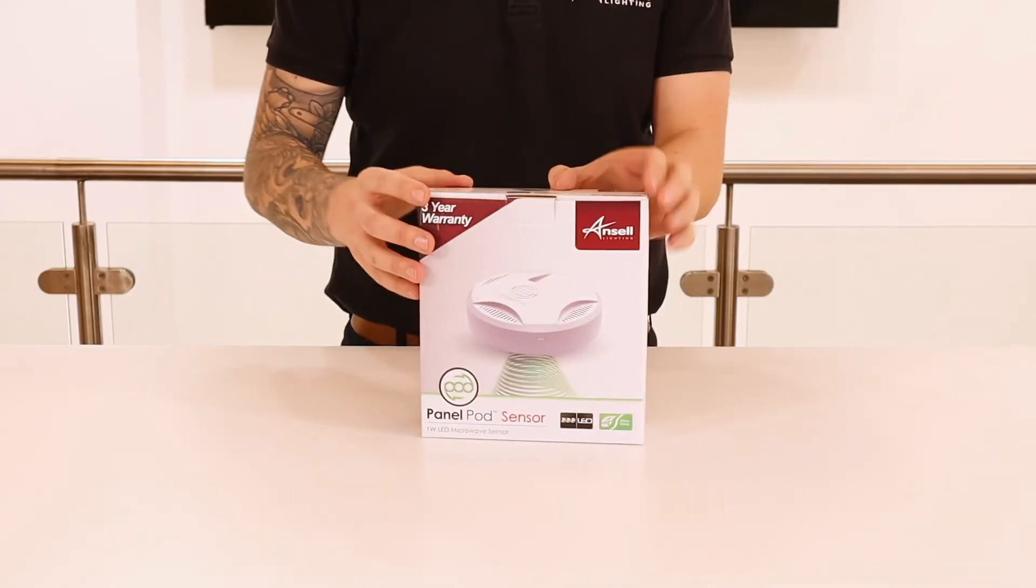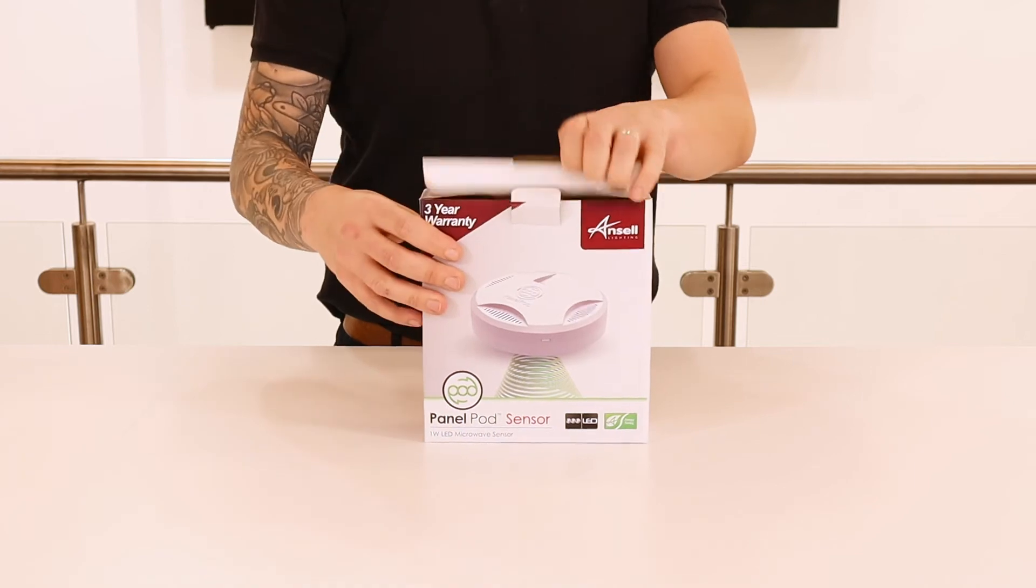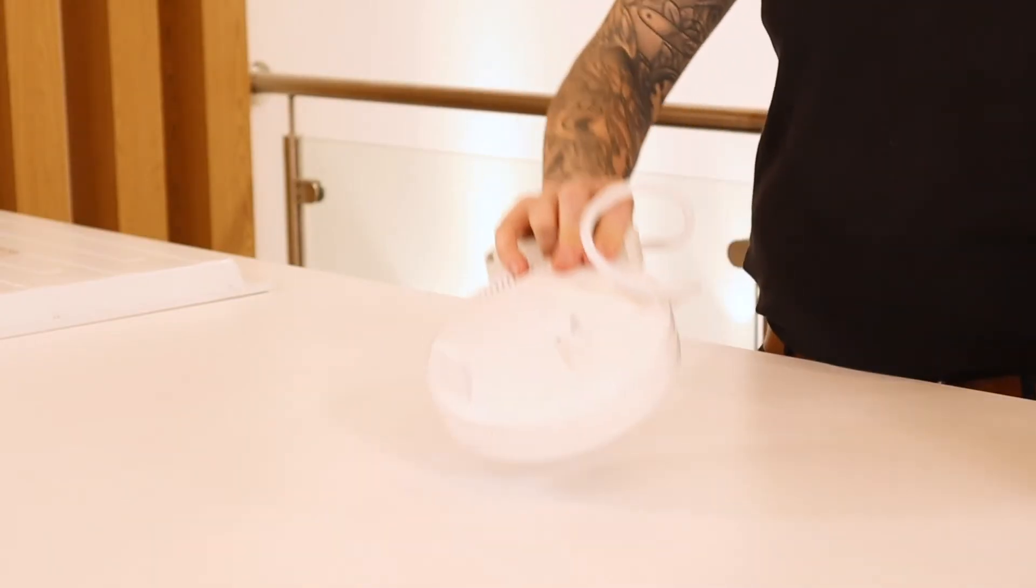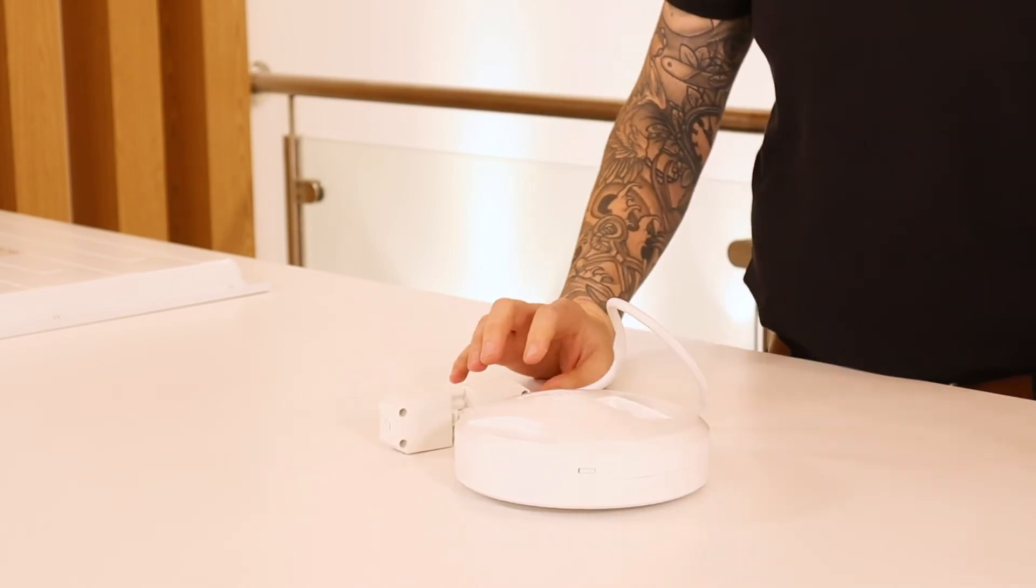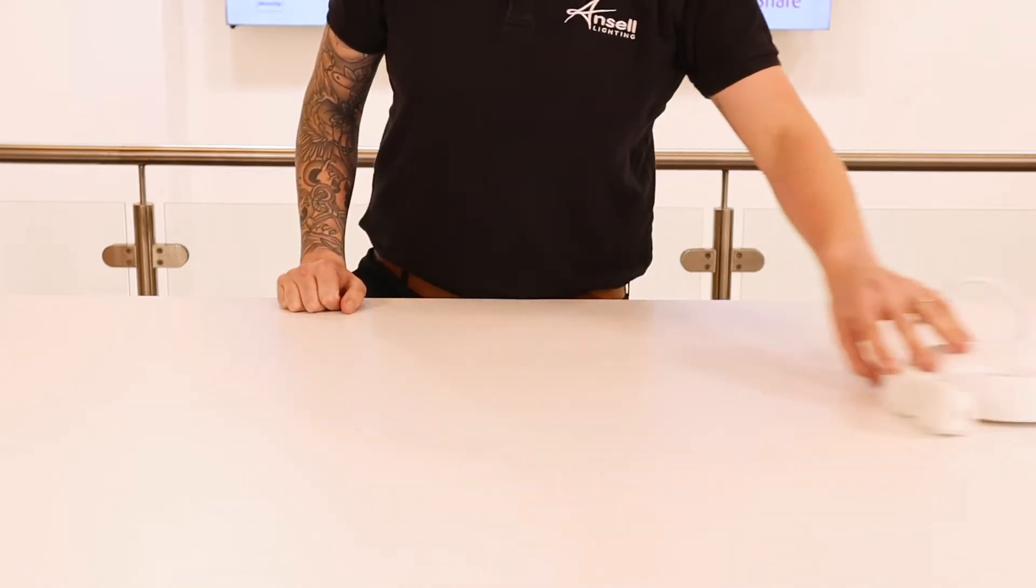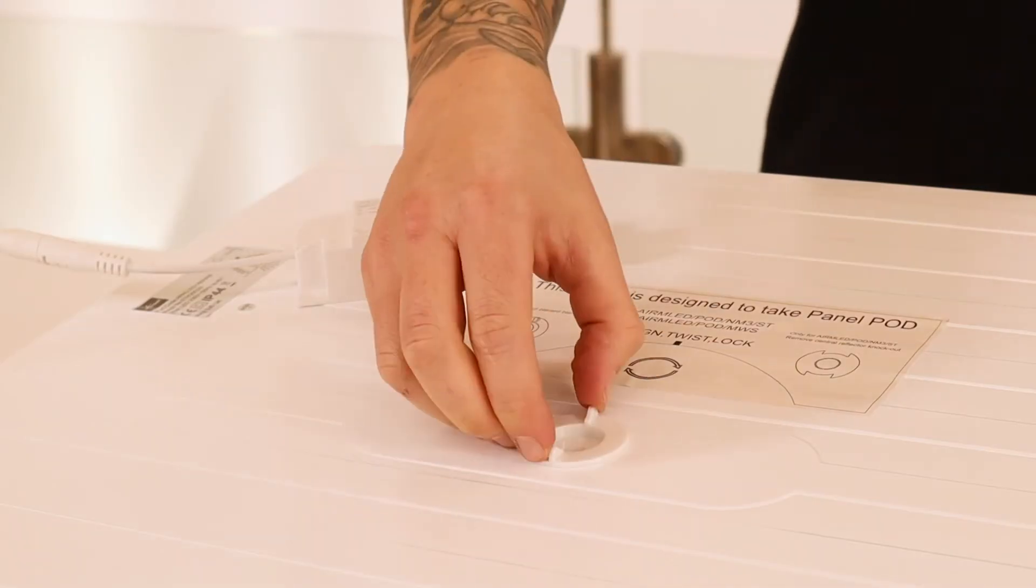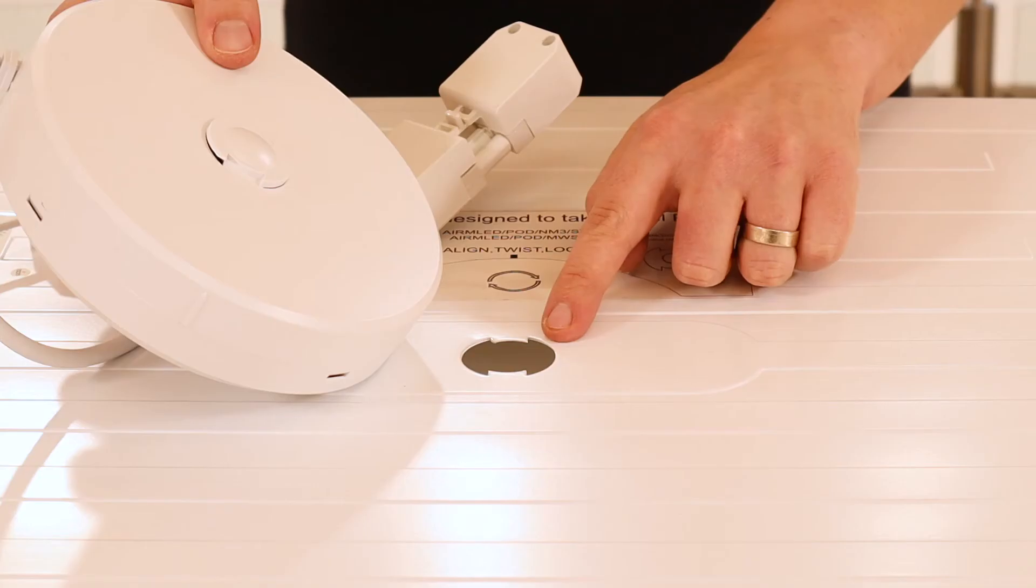The PanelPod sensor can be installed in the same way as the PanelPod emergency and enables the panel to have 360-degree motion detection. The only exceptions are that you do not need to open the housing, and more importantly, do not remove the pre-punched reflector sheet cutout.